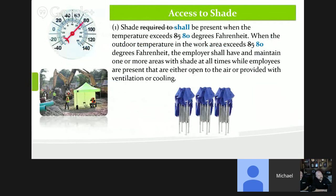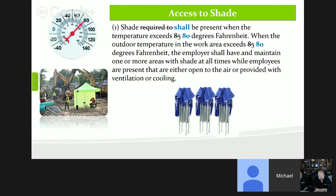Regarding access to shade, the temperature threshold has been lowered from 85 degrees to 80 degrees — meaning at 80 degrees, shade must be up and present. Employees have the right to ask for a break in the shade even if it's less than 80 degrees, so shade must always be available. If you have shade structures on your job site, they don't have to be erected until 80 degrees, but when that temperature hits, it must be up.